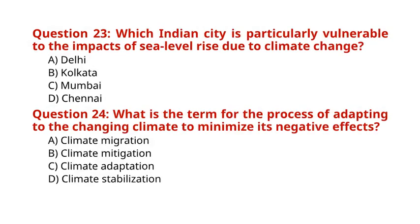Question 23: Which Indian city is particularly vulnerable to the impacts of sea level rise due to climate change? A. Delhi. B. Kolkata. C. Mumbai. D. Chennai. The correct answer to Question 23 is option C: Mumbai. Question 24: What is the term for the process of adapting to the changing climate to minimize its negative effects? A. Climate migration. B. Climate mitigation. C. Climate adaptation. D. Climate stabilization. The correct answer to Question 24 is option C: Climate adaptation.